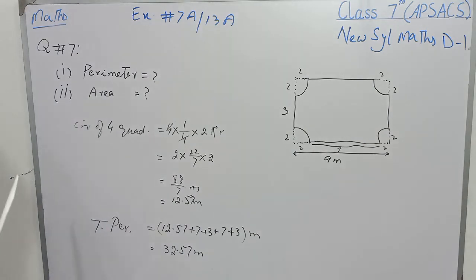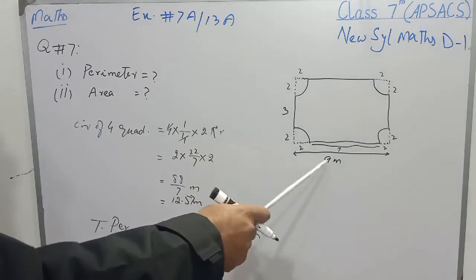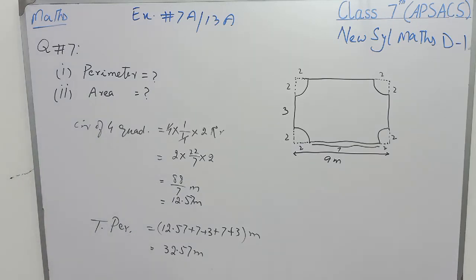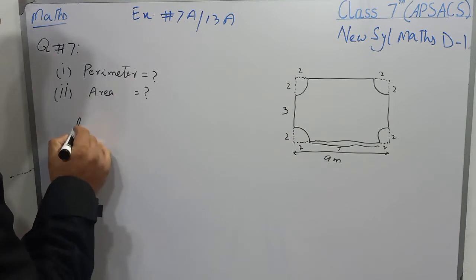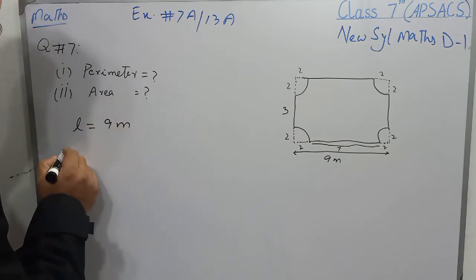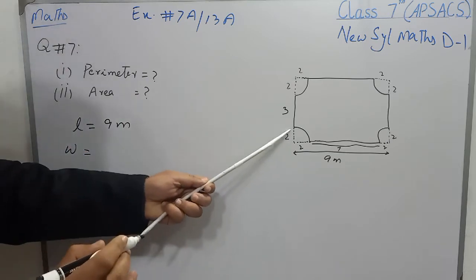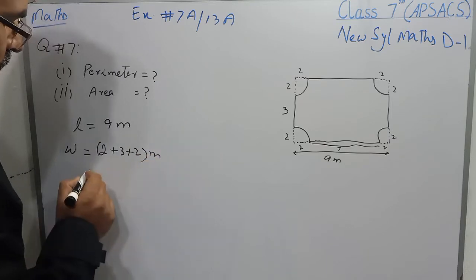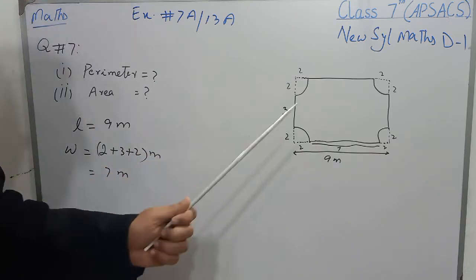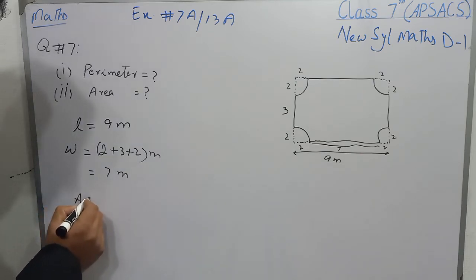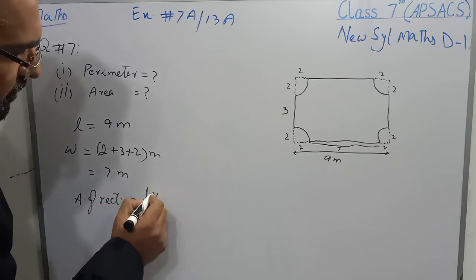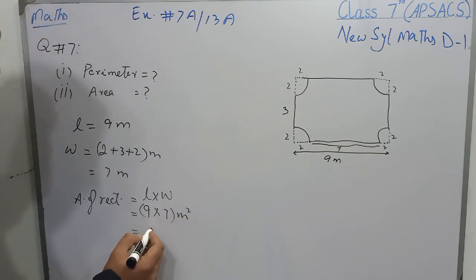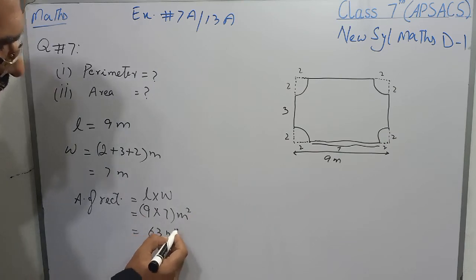Now we find the area of this figure. We will find the area of the rectangle and then subtract the area of the 4 quadrants to get the area of the figure. The length of the rectangle is 9 meters and the width is 2 plus 3 plus 2, which is 7 meters. Area of rectangle equals length multiplied by width: 9 multiplied by 7 gives 63 meter square.